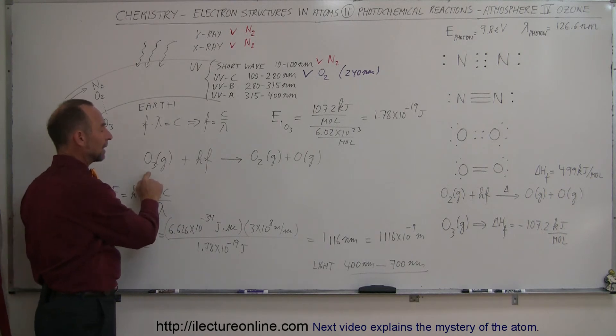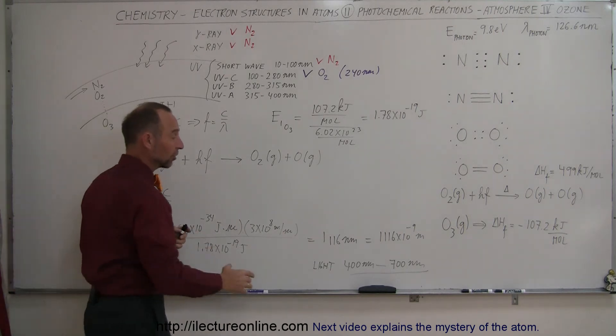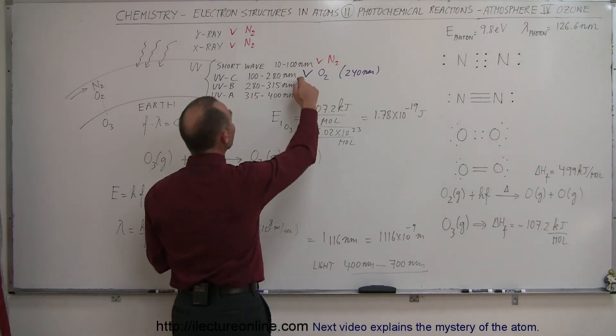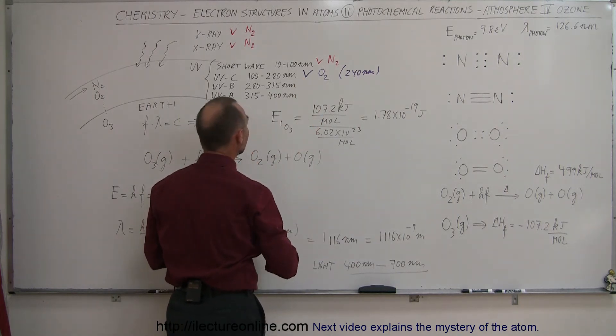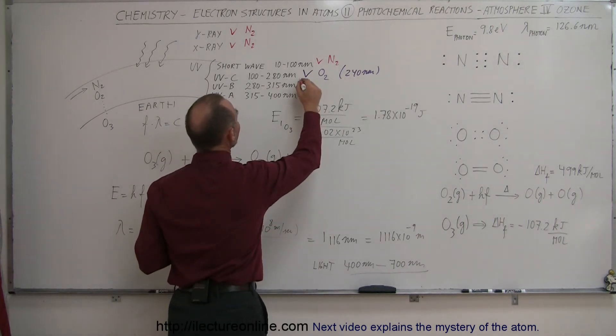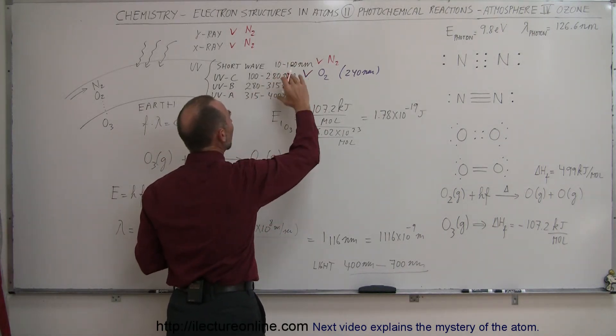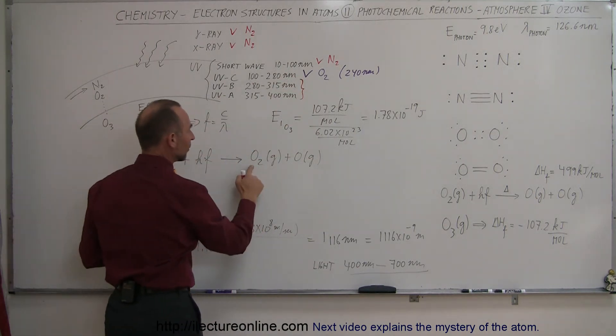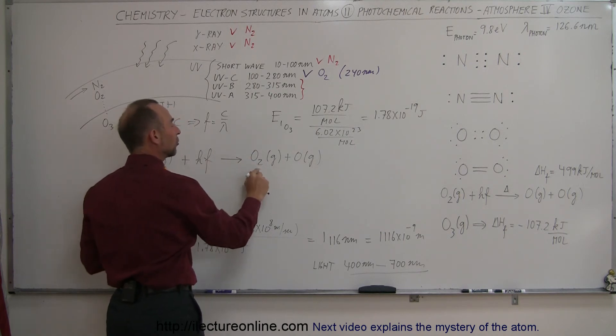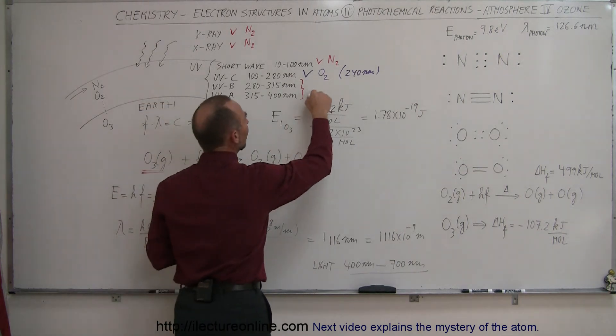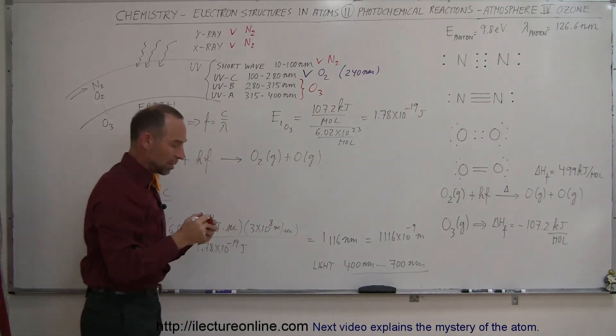Ozone can absorb visible light and so forth, but the ones most likely to break up an ozone molecule are the highest energy photons. These photons coming in from space will be absorbed by the ozone molecule and rip them up, turning them back into oxygen gas, diatomic O2, and oxygen atoms. This is absorbed by the O3 molecules.